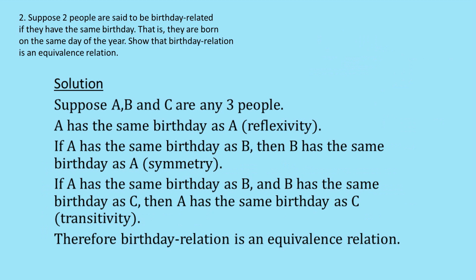So suppose a, b and c are any three people. A has the same birthday as a, so that's the reflexivity. If a has the same birthday as b, then b has the same birthday as a. That's a symmetry. And then finally, we put, if a has the same birthday as b and b has the same birthday as c, then a has the same birthday as c. That's the transitivity. And so then we can conclude by writing, therefore, birthday relation is an equivalence relation.